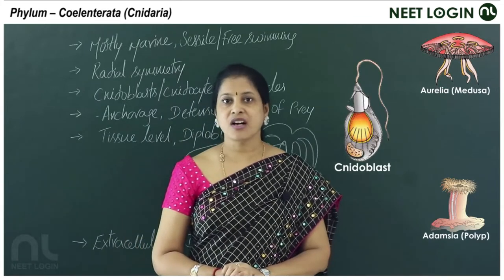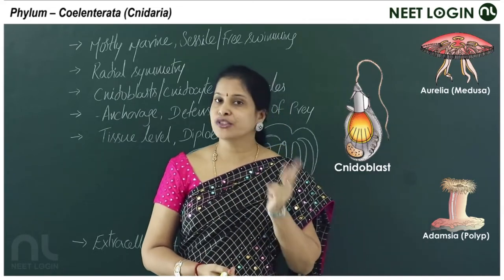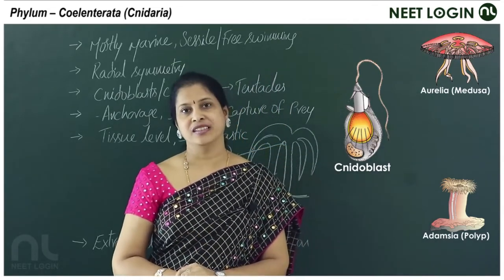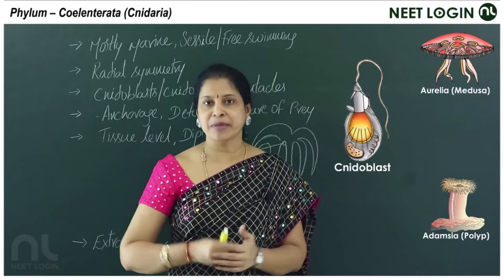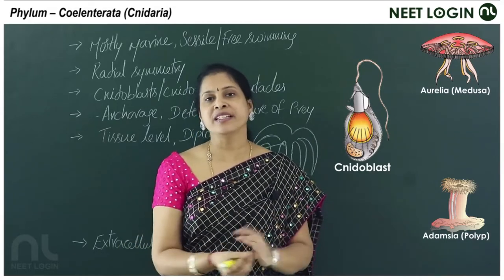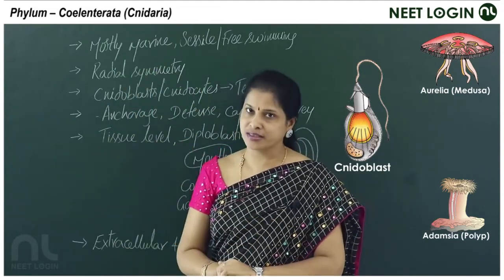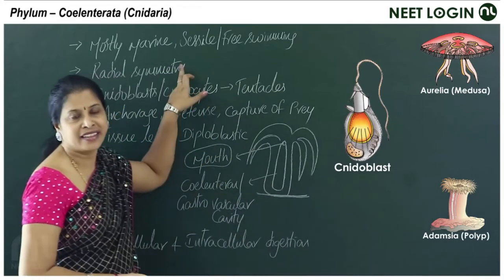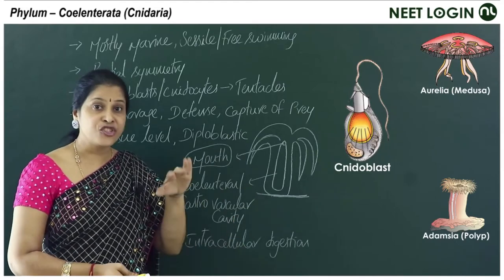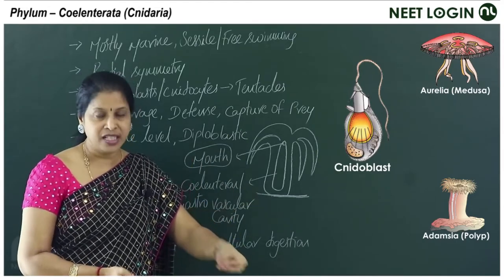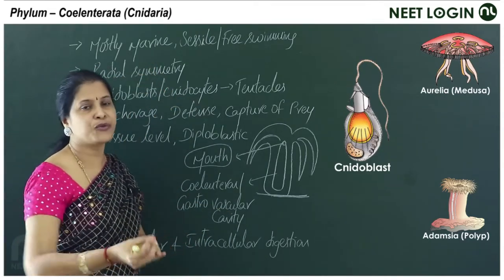The coelenterates are cnidarians. These are aquatic organisms — mostly marine, with a few freshwater forms, similar to poriferans. Some are sessile like hydra, attached to the substratum, and some are free-swimming like jellyfishes.